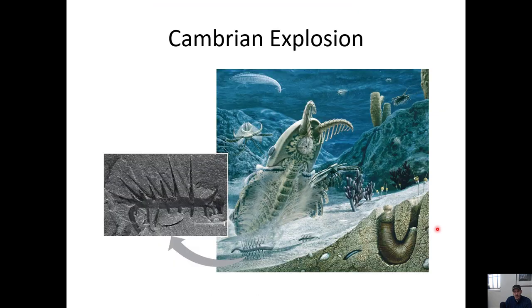Here's an example of a Cambrian ocean showing all these different phyla - we have porifera and arthropods and annelid worms, and this is probably a little chordate down here. You can find all these different phyla in this image.